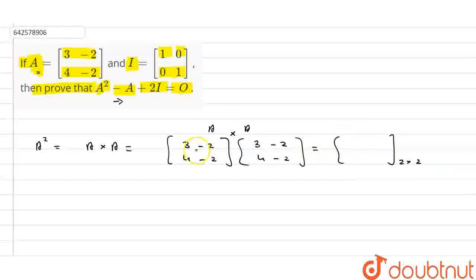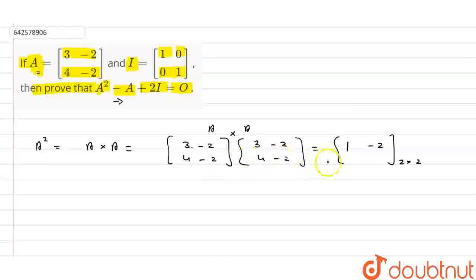The first element is 3×3 plus (-2)×4, which equals 9 - 8 = 1. The second element of the first row is 3×(-2) plus (-2)×(-2), which is -6 + 4 = -2. The first element of the second row is 4×3 plus (-2)×4, which is 12 - 8 = 4. The second element of the second row is 4×(-2) plus (-2)×(-2), which is -8 + 4 = -4. So A squared is [[1, -2], [4, -4]].